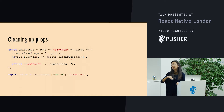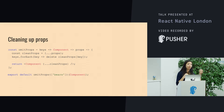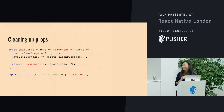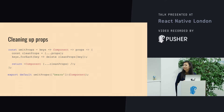Cleaning up props is a useful one. A component might have loads and loads of props coming into it, and you might want to clear them up because it's just cleaner to read — the component doesn't get too confused as to what's happening.